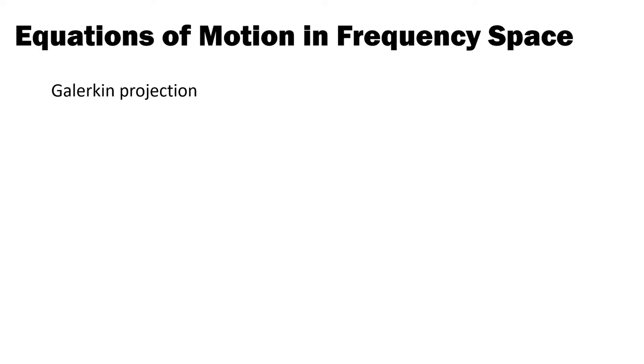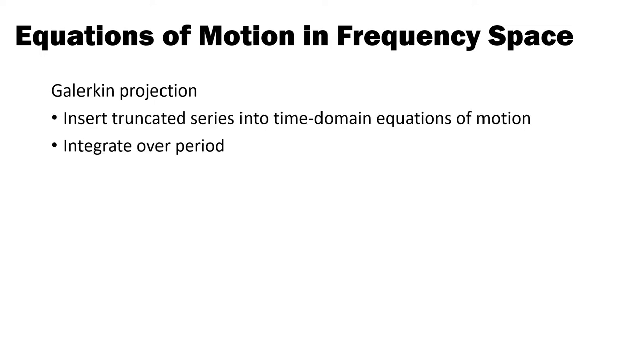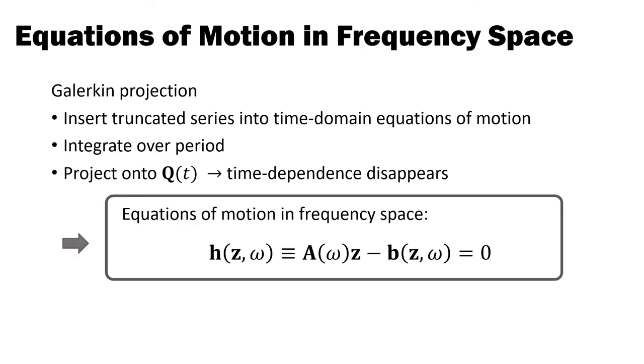Now, to obtain the equations of motion in frequency space, we perform a so-called Galerkin projection that, in the interest of time, I'll only sketch here briefly. We first insert the truncated series into the time domain equations of motion, then integrate the resulting expressions over the period of the system, and finally project onto the trigonometric basis Q. Due to the orthogonality of Q, the time dependence disappears and we obtain equations of motion in frequency space that do not depend on time anymore.